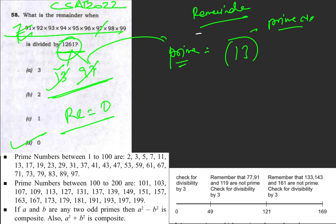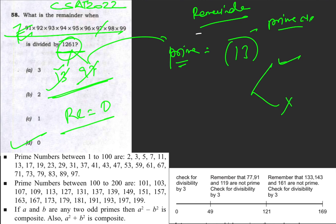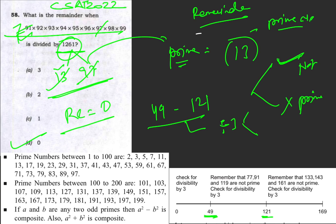Here is the shortcut: from 0 to 49, to check whether a number is prime, simply divide it by 3. If it is divisible by 3, it is not a prime number; if it is not divisible by 3, then it is a prime number. For numbers between 49 and 121, the same rule applies — if not divisible by 3 it is prime — except for the exceptions 77, 91, and 119, which are not prime despite failing the divisibility test.